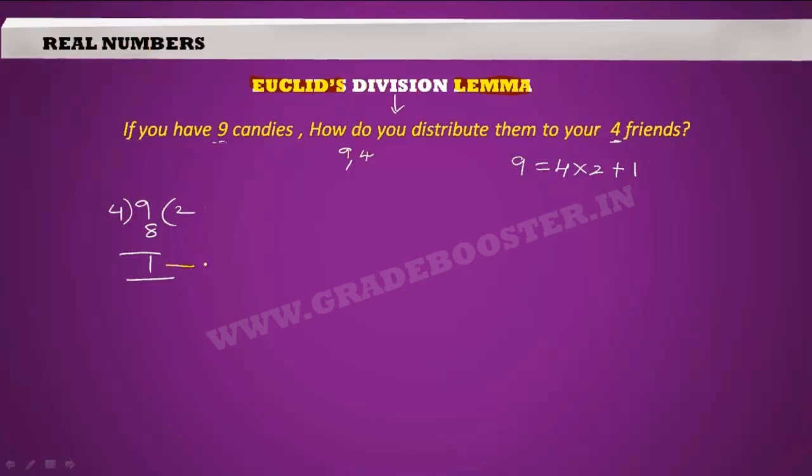If we denote the remainder with letter R and the quotient with Q, and the numbers with which we carried out the division as A and B. Consider this 9 as A and this 4 as B. Let us mark them even in the division. Now if you observe the relation between A, B, Q and R: A is equal to B into Q plus R. That is 9 equal to 4 into 2 plus 1.